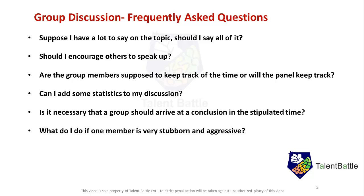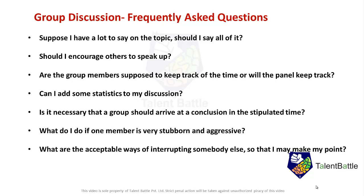What do I do if one member is very stubborn and aggressive? You could ignore them and address other members, be assertive and point out that their argument is faulty, or acknowledge their point and indicate the group must progress further by discussing others' ideas. What are acceptable ways of interrupting someone so I can make my point? You can say: 'Excuse me, but I feel what you are saying is not universally true,' or 'I agree with your idea and would like to add a point,' or 'I think you are right, but could you clarify what if...?' I will create separate videos listing all the phrases for different situations.